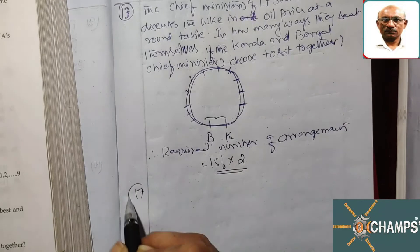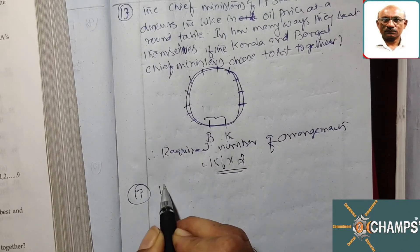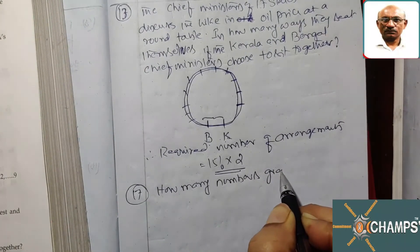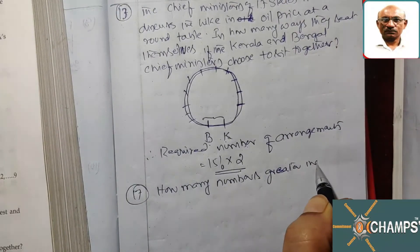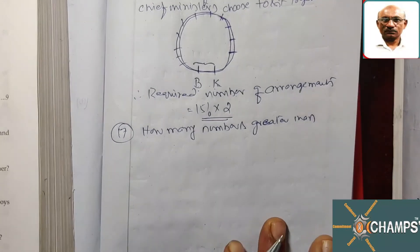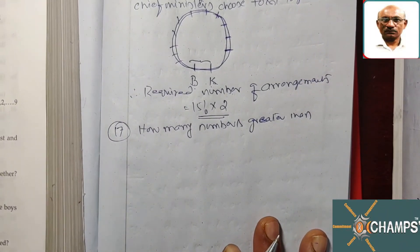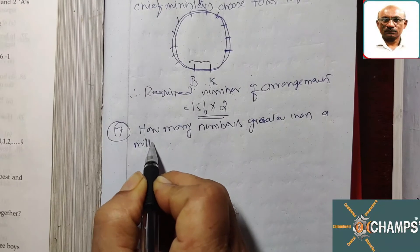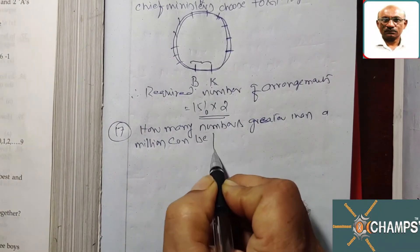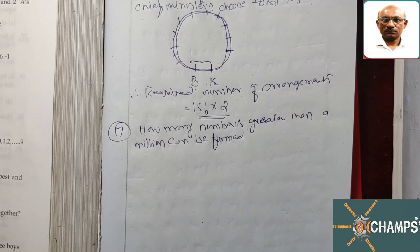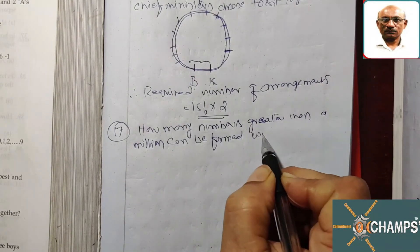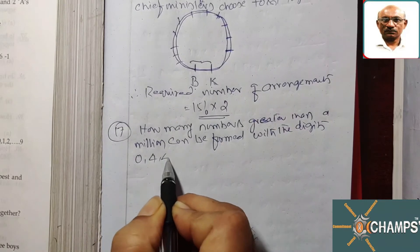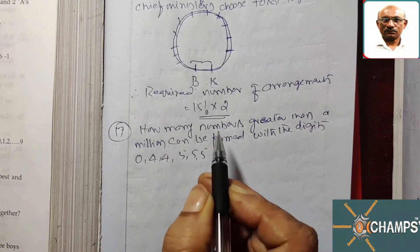Now look at question number 17. How many numbers greater than a million can be formed with the digits 0, 4, 4, 5, 5, 5, 3?